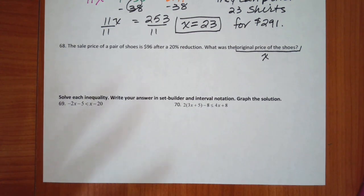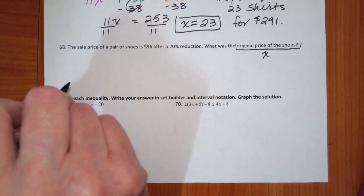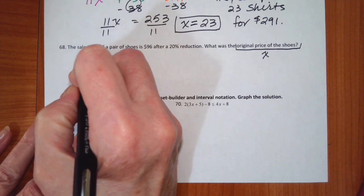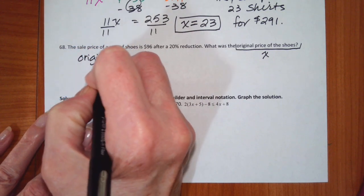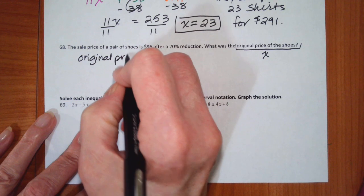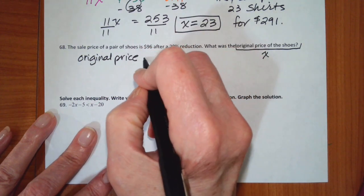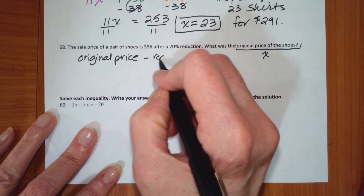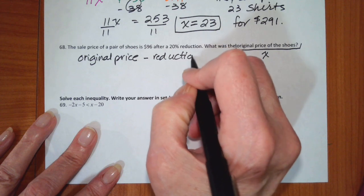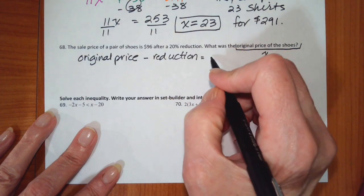Okay. So how do I figure out the sale price of the shoe? Well, I'm going to take the original price minus the reduction equals the sale price.